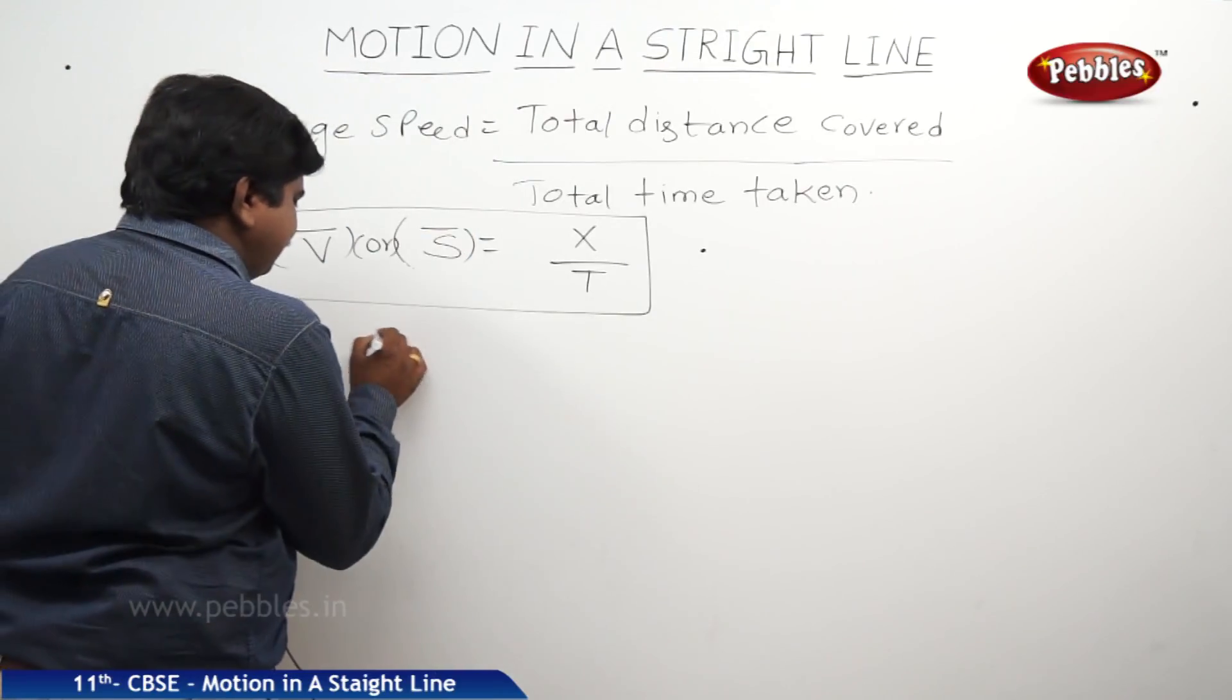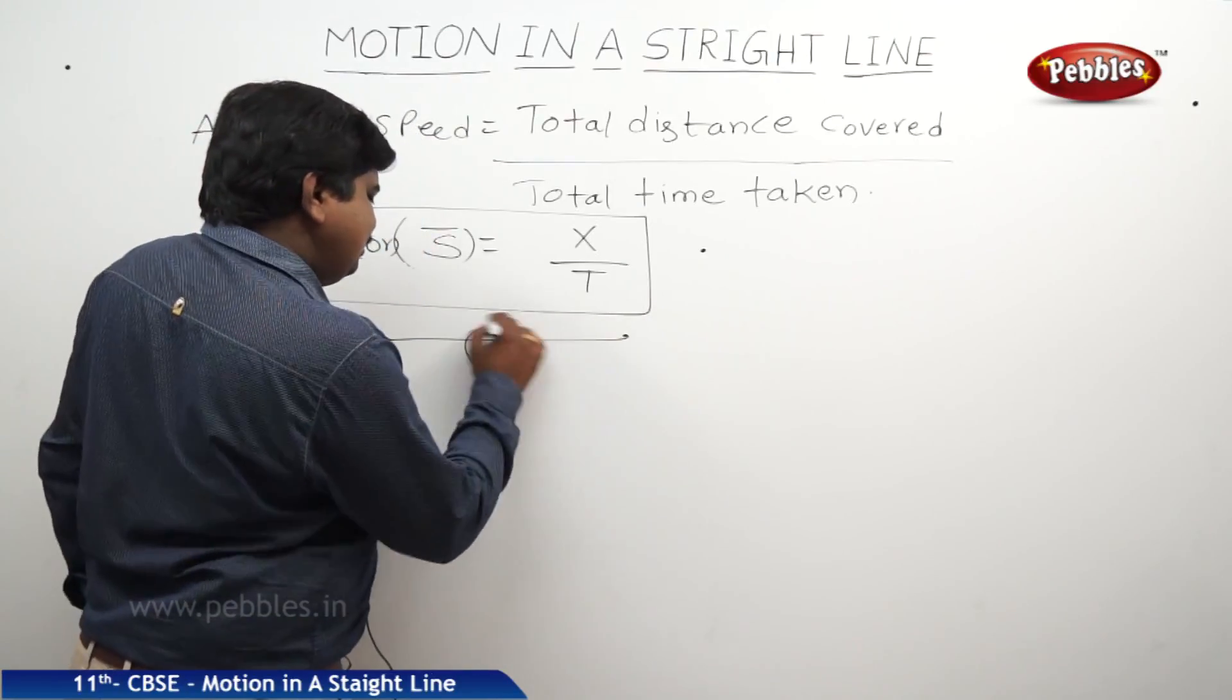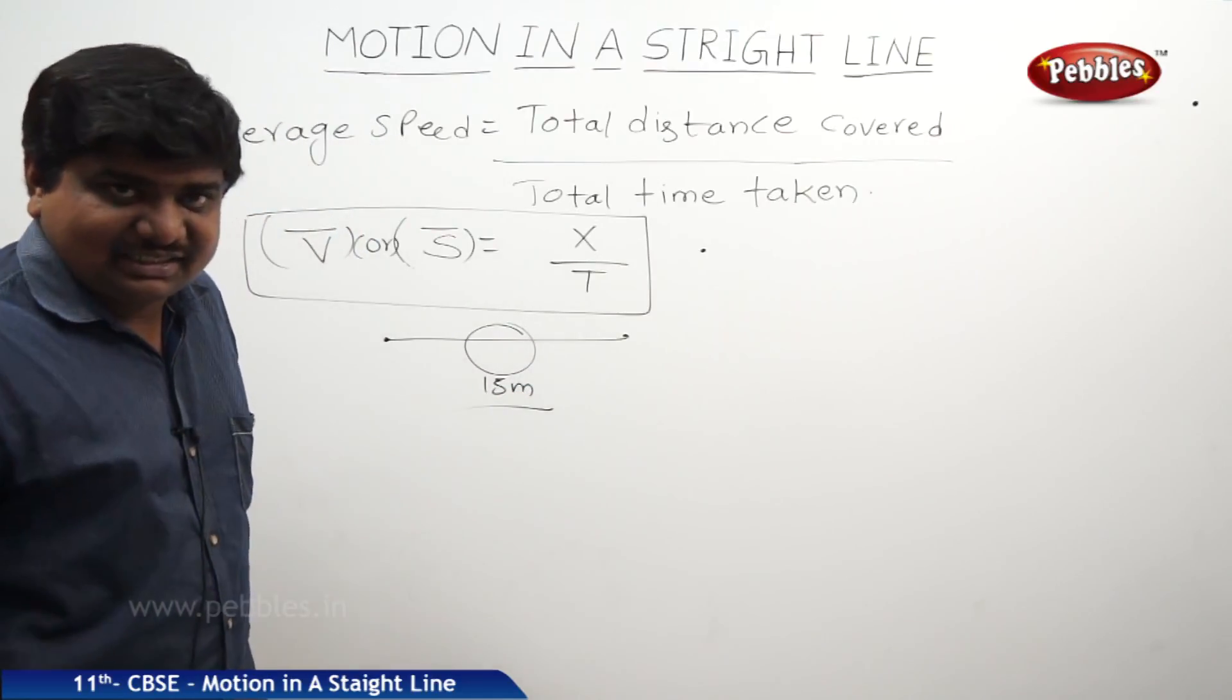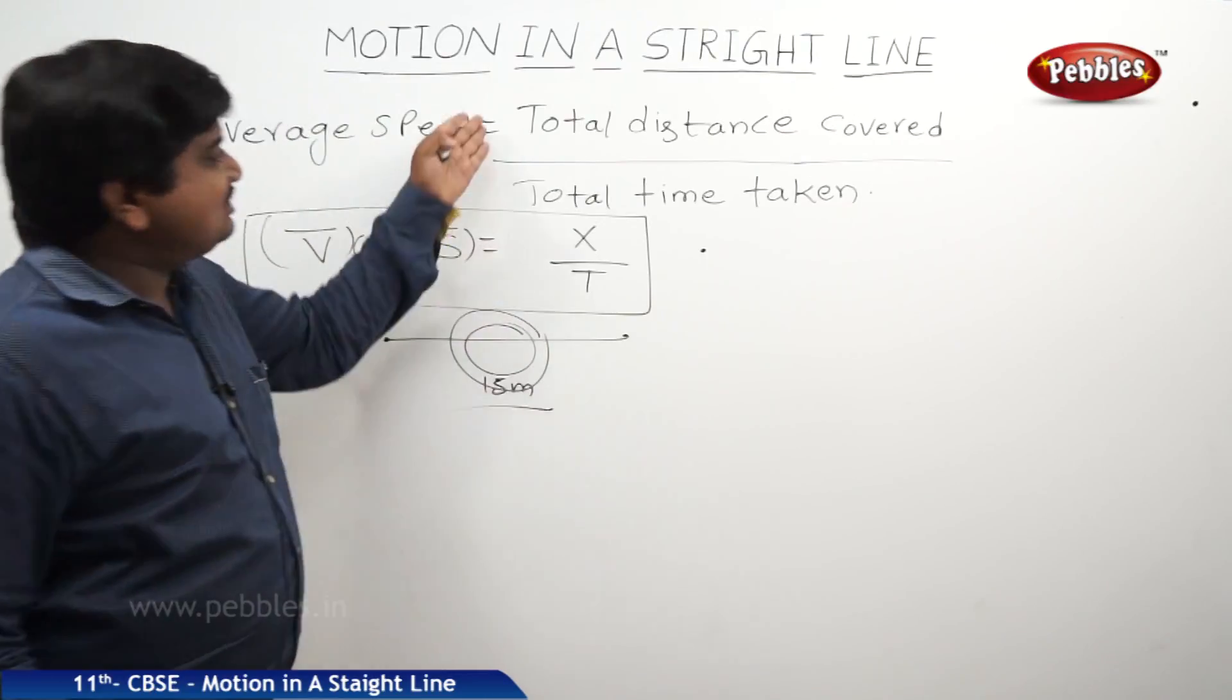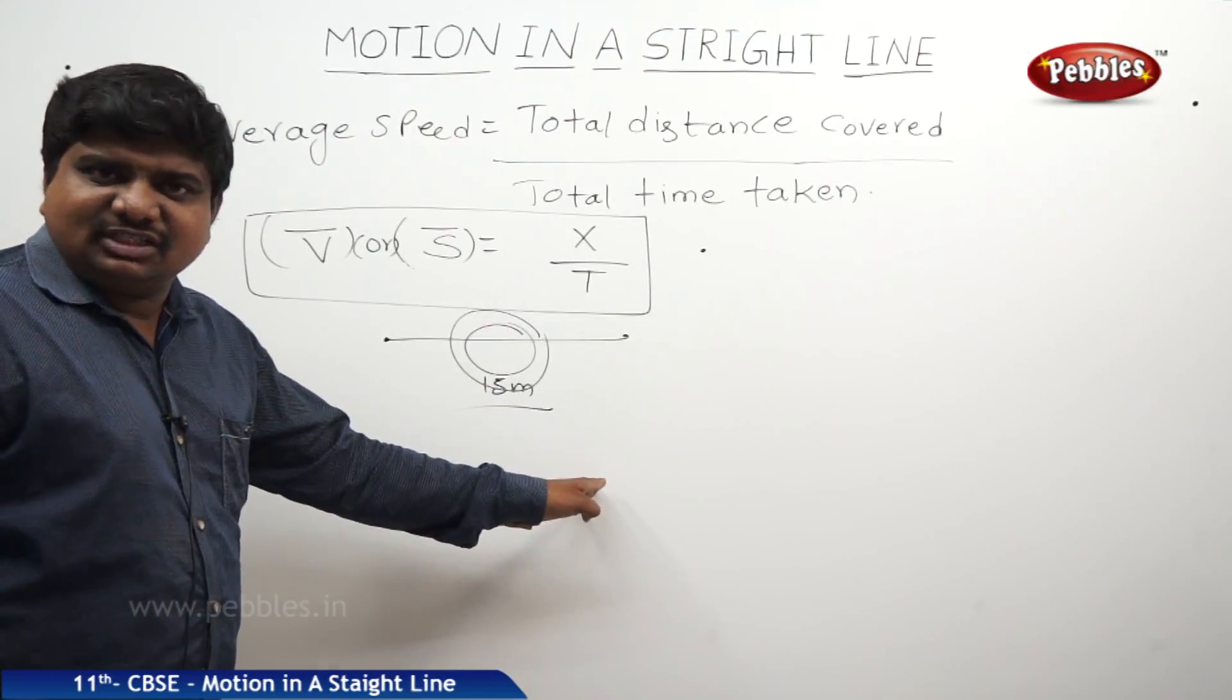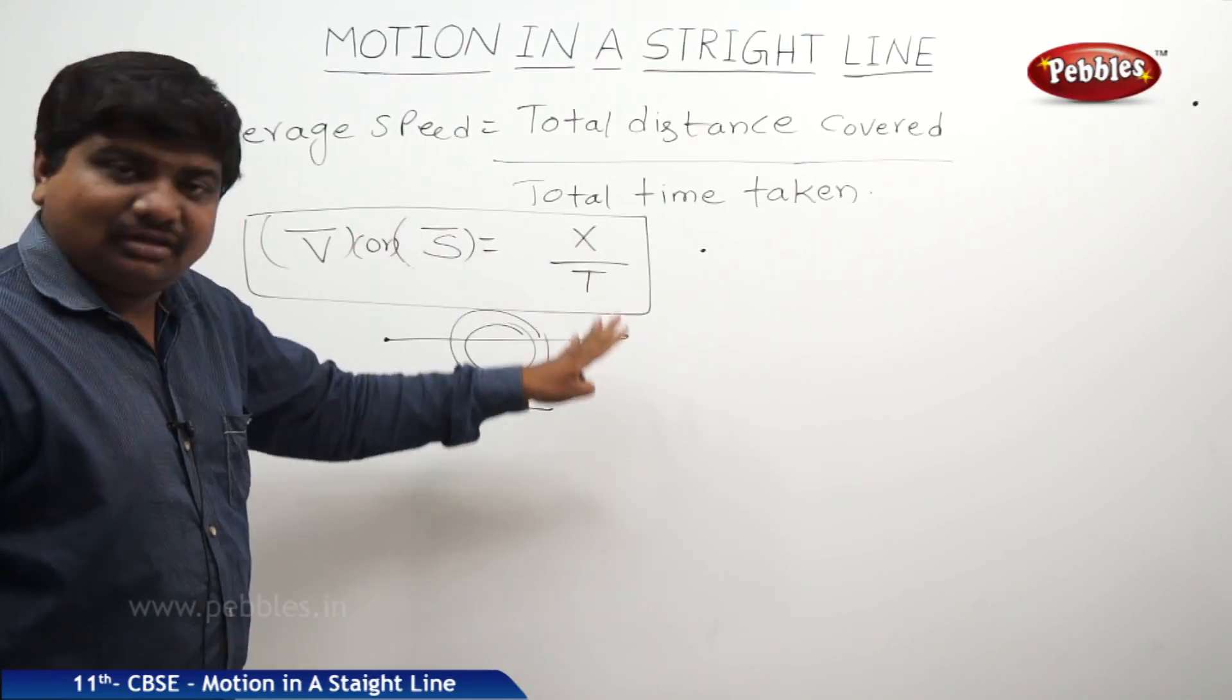That's why this average speed value may change. Suppose if a bus has started from one point, it has reached to another point. In the middle, for 15 minutes to half an hour, the bus was stopped for many other reasons. Let us suppose. If this was happened, we are including or we are adding this 15 minutes to its journey. We are not at all removing this 15 minutes time in the total time taken. We are adding also.